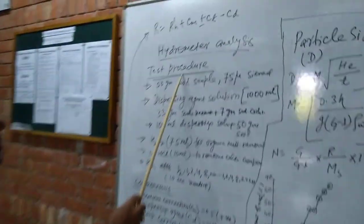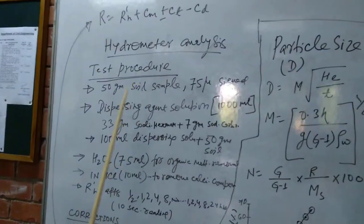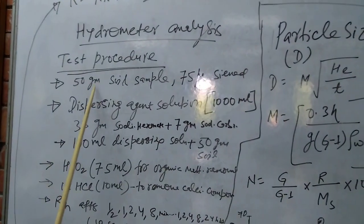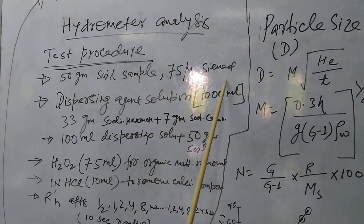We are going to go for the test procedure for hydrometer analysis. For this, we can take 50 grams of soil sieved through 75 micron sieve.